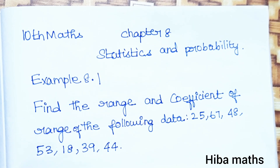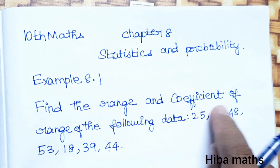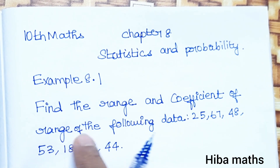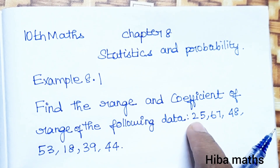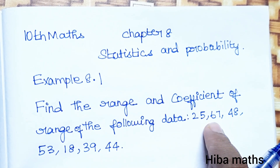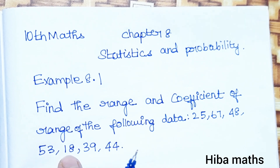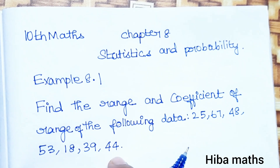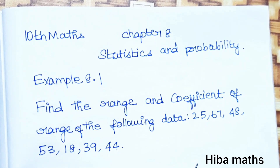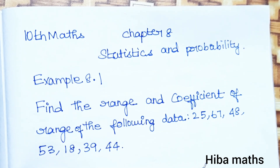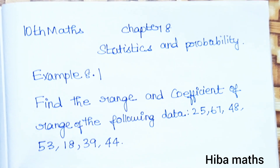Hello students, welcome to Hibamaks 10 Standard Marks Chapter 8 Statistics and Probability, Example 8.1. Find the range and coefficient of range of the following data: 25, 67, 48, 53, 18, 39, and 44. We need to learn the range and coefficient of range for these values.